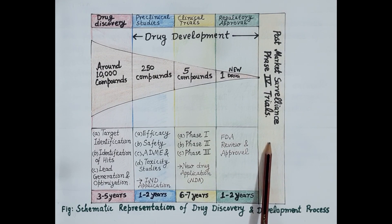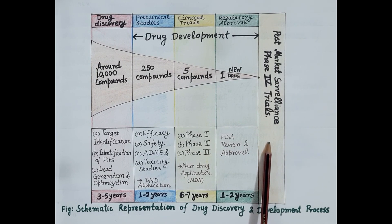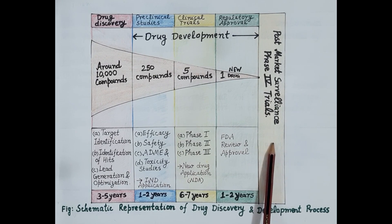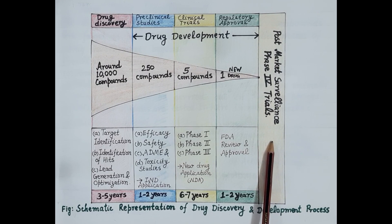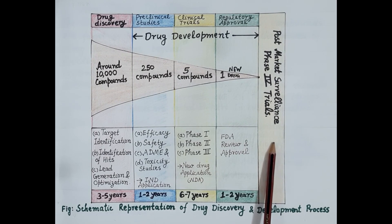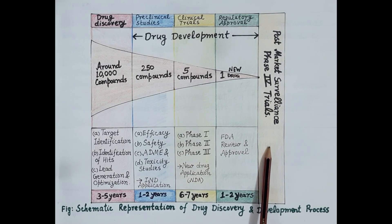Many times a drug is withdrawn from the market because of serious adverse drug reactions — for example, sibutramine, an appetite suppressant, was withdrawn from the market as it increased the risk of heart disease and stroke. Monitoring drug safety is very essential when the drug is in the market, so Phase 4 trials are very important for reporting adverse drug reactions, especially unpredictable ones such as idiosyncratic reactions. This has been a quick overview of the entire process of new drug discovery and development. If you find the video useful, kindly like, subscribe, and share.